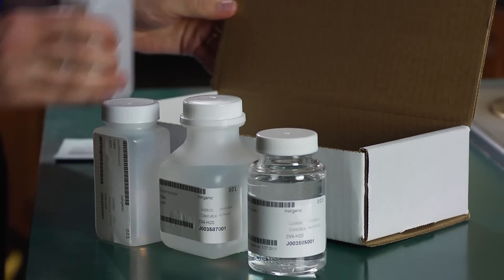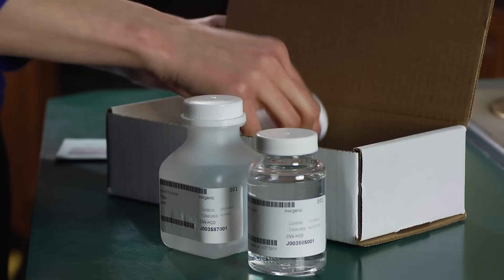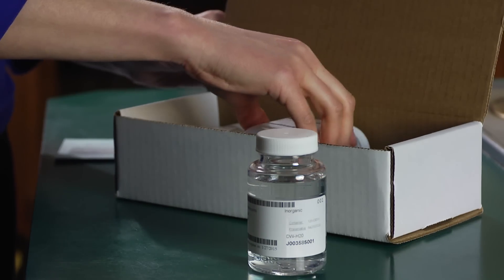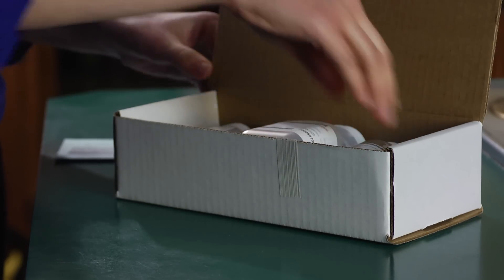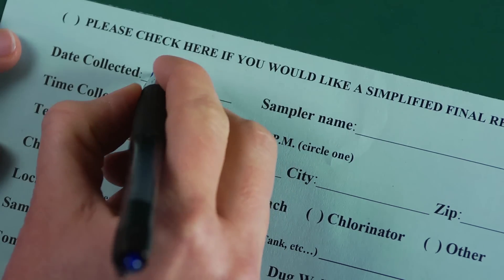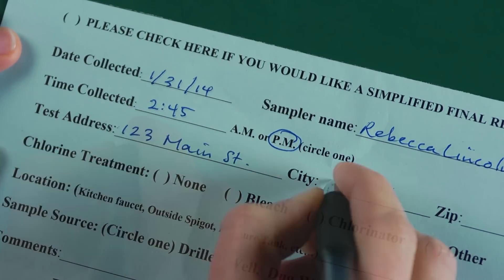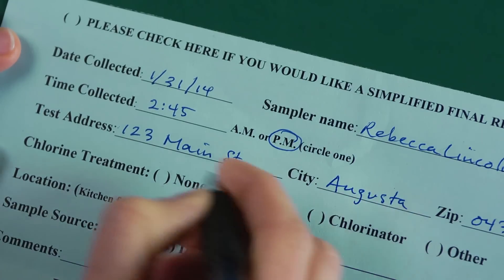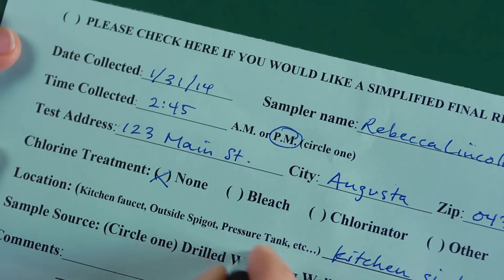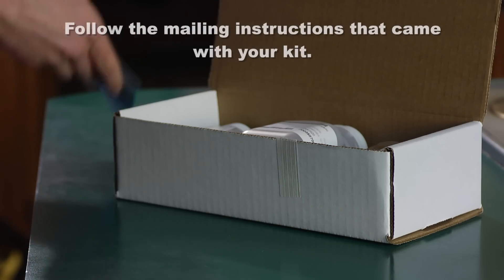All the bottles go back in the box they came in. Before you seal up the box, fill out the form that came with your test. It's very important that you write down the date and time you filled the bottles. The lab will probably want to know where you collected the water, what type of well you have, and if any chlorine treatment is being used in the water.